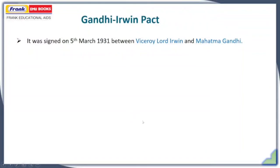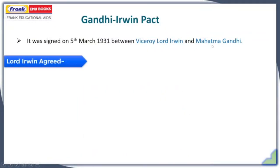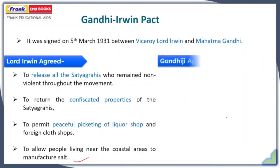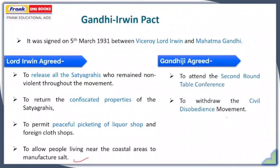The Gandhi-Irwin Pact was signed on March 5, 1931, between Lord Irwin and Mahatma Gandhi. Lord Irwin agreed to release all Satyagrahis who remained nonviolent through the movement, to return the confiscated property of Satyagrahis, to permit peaceful picketing of liquor shops and foreign clothes shops, and to allow people living near coastal areas to manufacture salt. As a result, Gandhiji agreed to attend the Second Roundtable Conference and to withdraw the Civil Disobedience Movement.